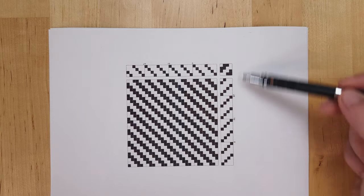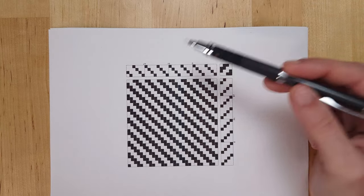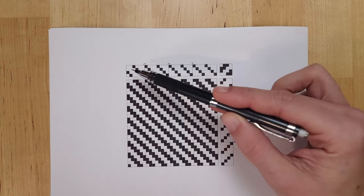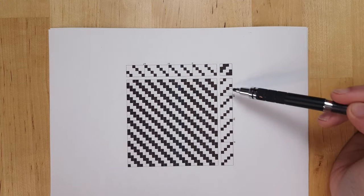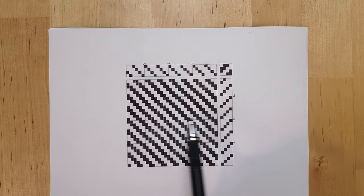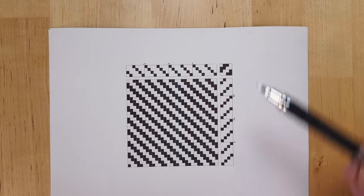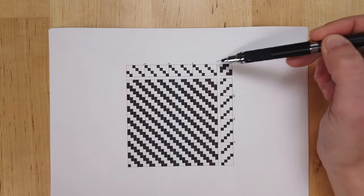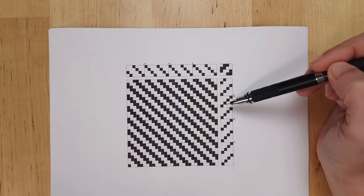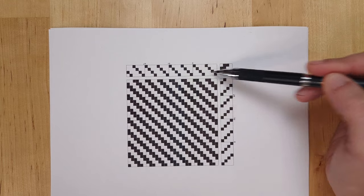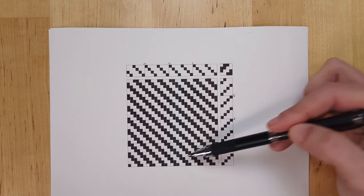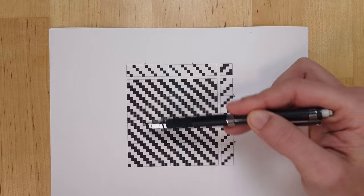Okay, this is a weaving draft. It's made up of four parts. You have the threading, which corresponds to the warp, the treadling, which corresponds to the weft, and the tie-up, which is how the threading and the treadling are related to each other. The result of these elements interacting together is this here. This is called the drawdown.